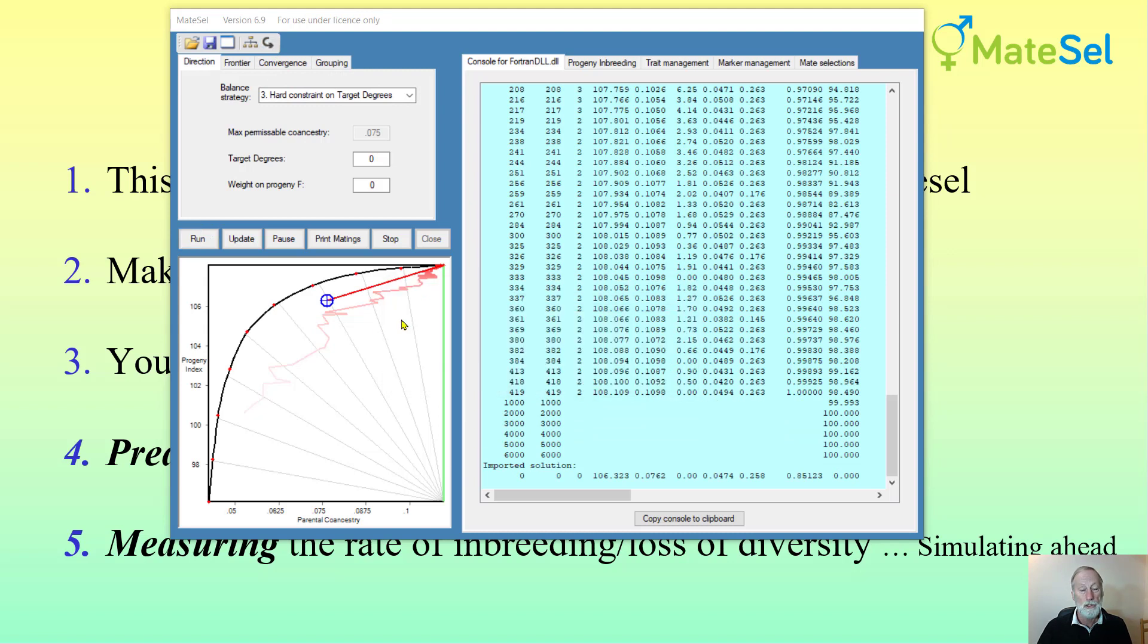Just to review that, this is the place we get to if we allow males to be used for 25 matings, and this is where we get to if we allow them only to be used for 10 matings. The frontier for the previous run is where my mouse is going. By using males more, we could be at the same point and yet have much more genetic gain, or we could be at the same level of gain and have much more genetic diversity.